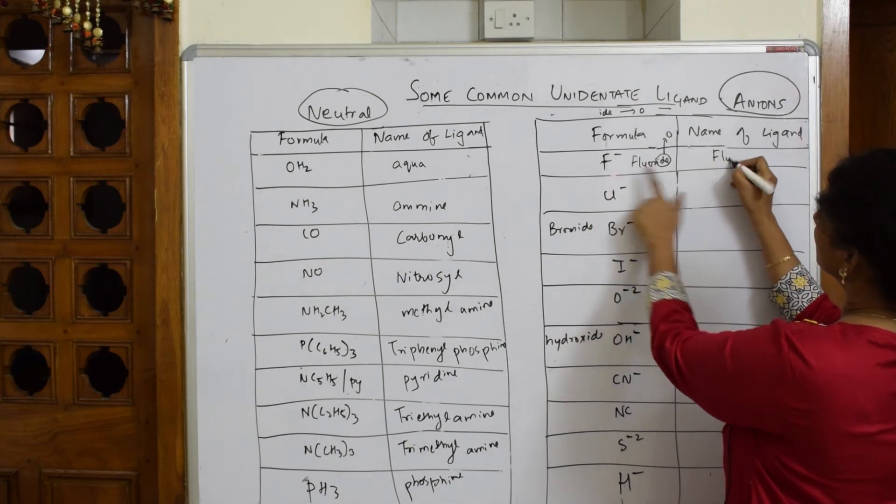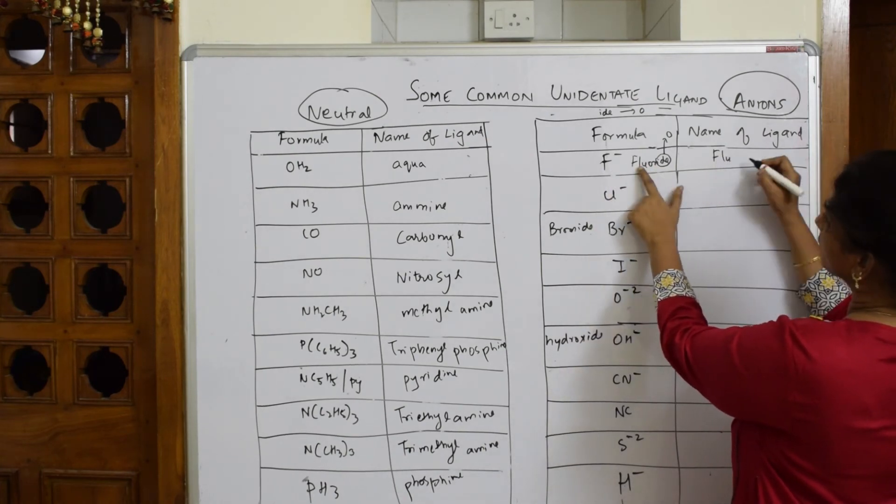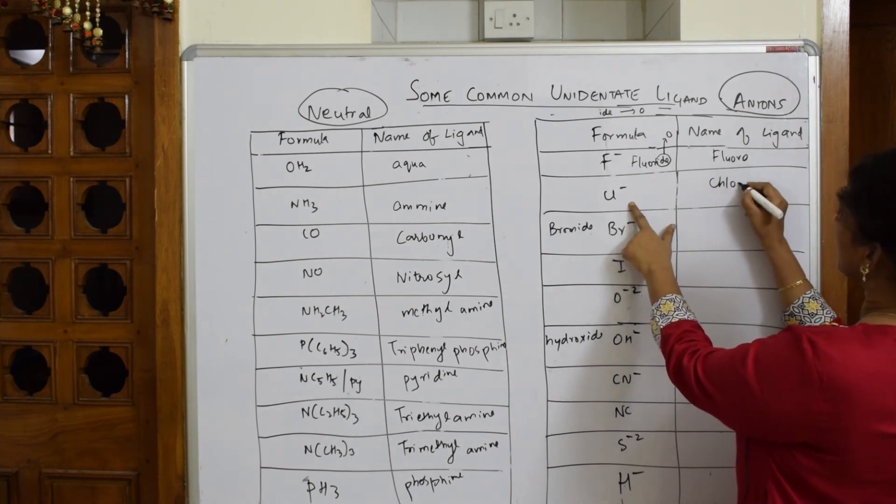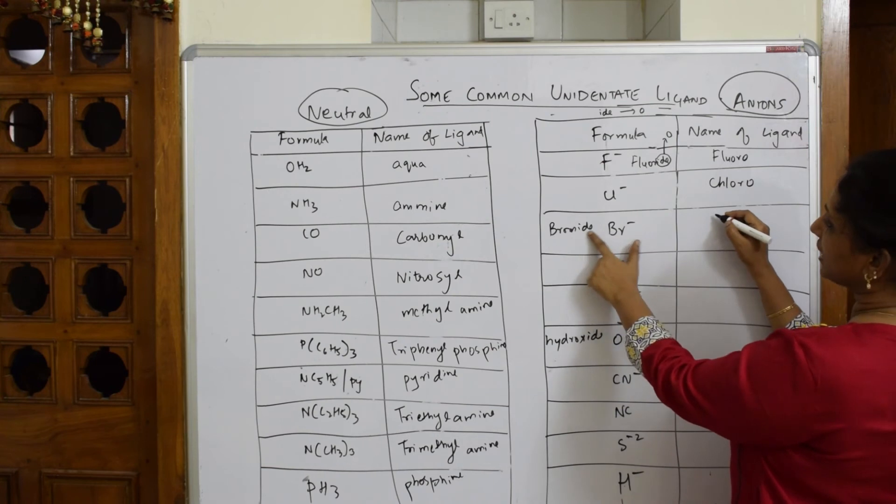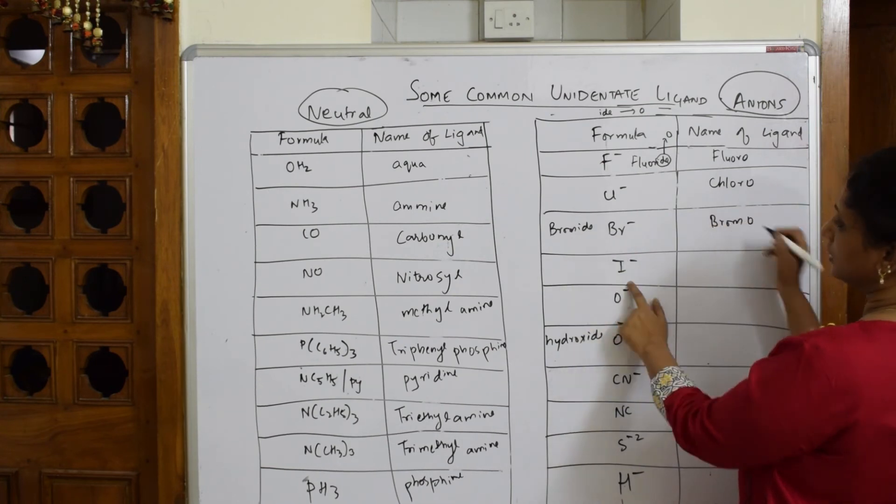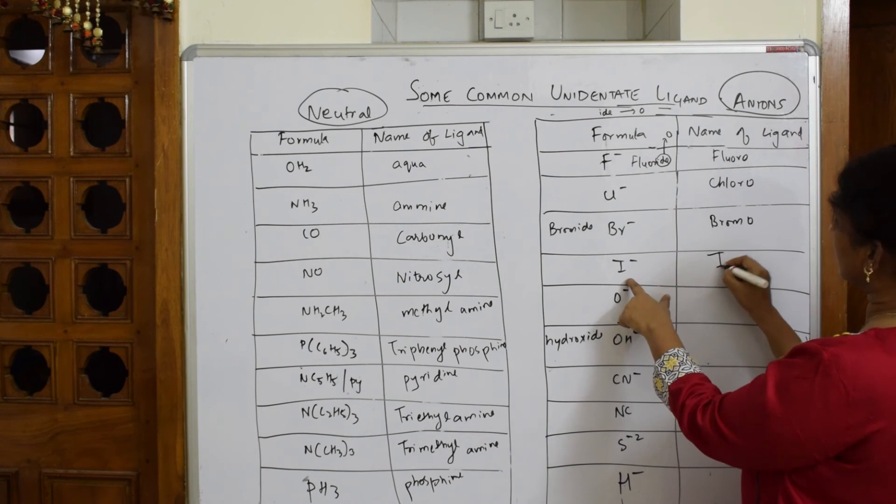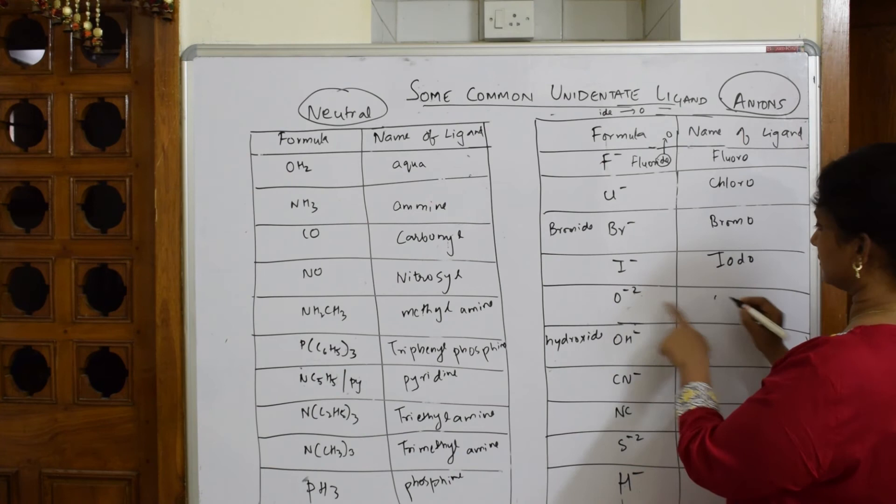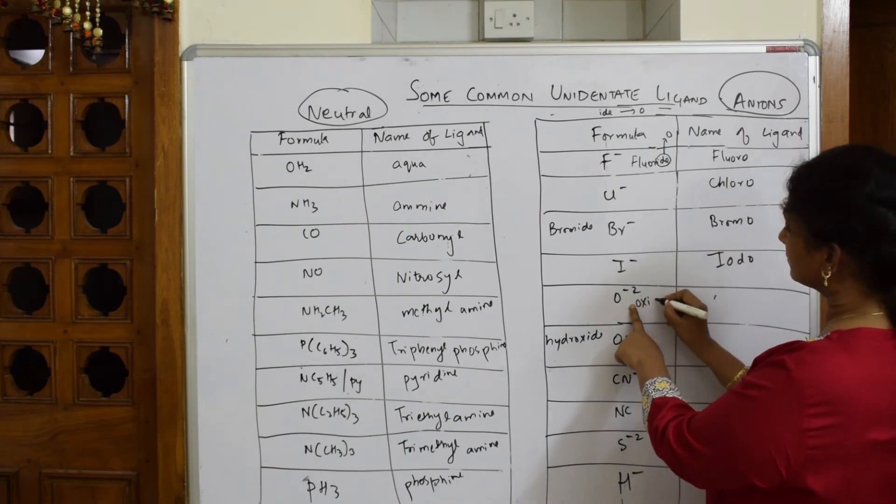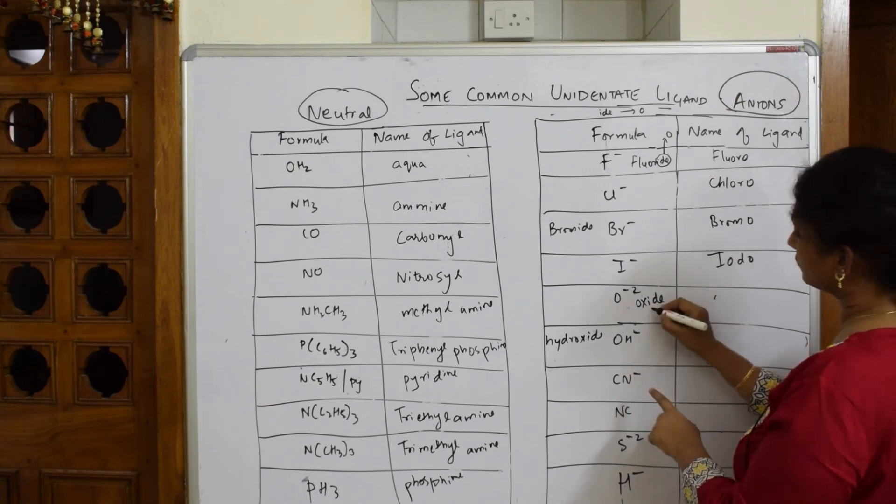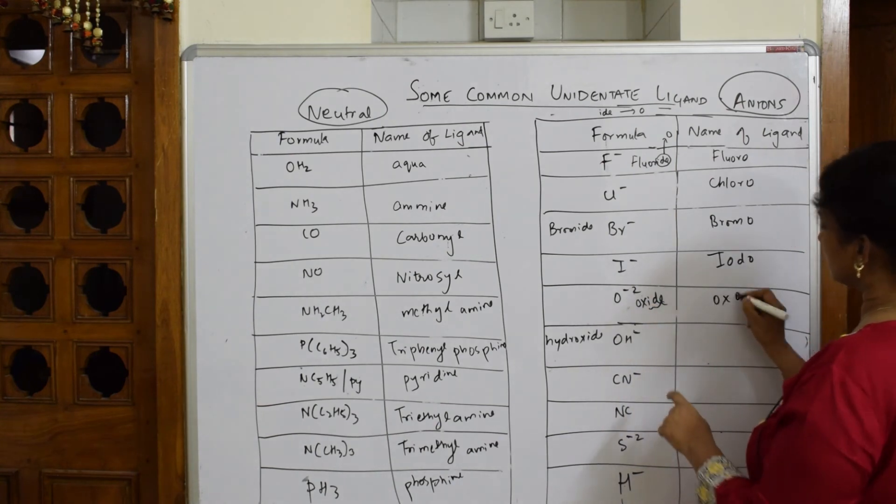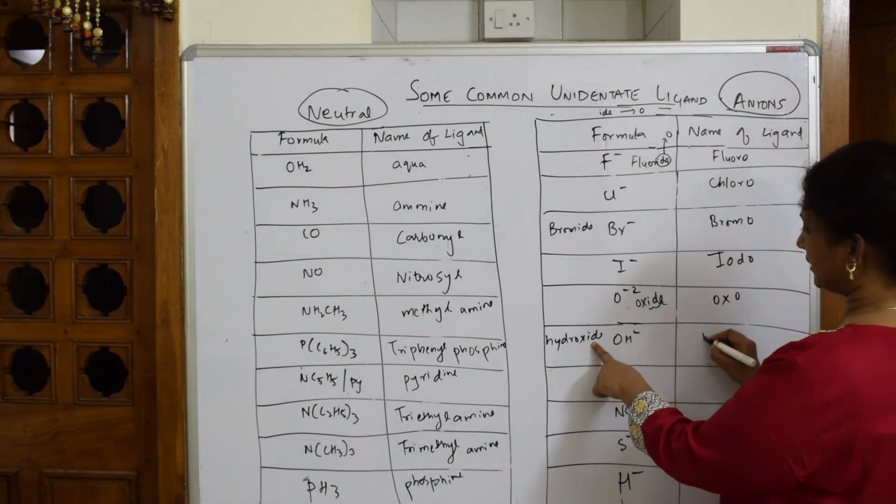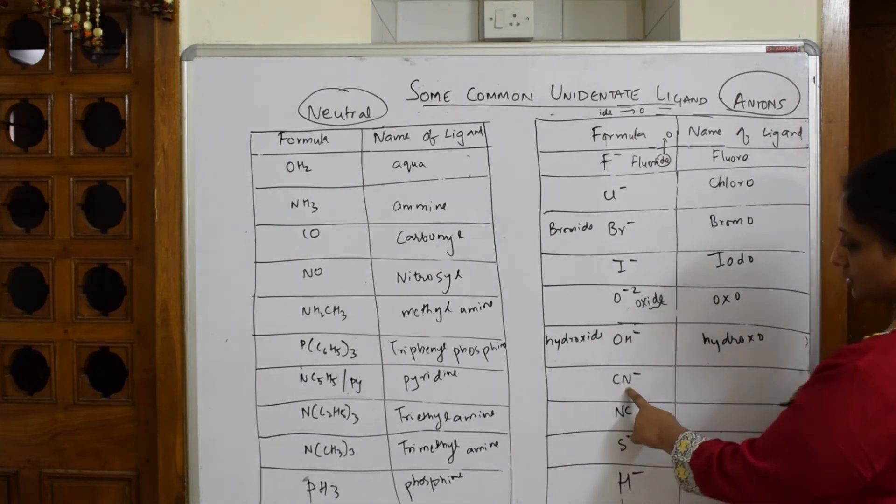Right now, fluoride will become fluoro—wherever there is -ide, take out and add -o. This is chloride, so chloro. Bromide—take out -ide and add -o: bromo. Iodide—take out -ide and add iodo. This is oxide, no—oxide, take out -ide and add oxo. Hydroxide—take out -ide and write hydroxo.